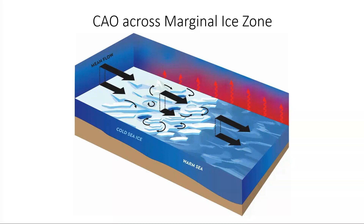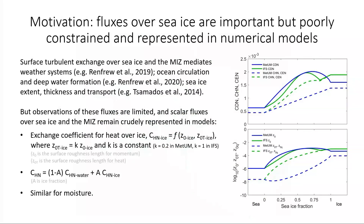During cold air outbreaks — in the northern hemisphere, northerly winds bringing very cold air from high latitudes over the warmer ocean — you get upward heat and moisture fluxes, but their distribution and magnitude depend critically on the surface roughness over the sea ice and the Marginal Ice Zone. These turbulent fluxes of momentum and scalar constituents are known to be important, influencing weather systems, ocean circulation and deep water formation, and sea ice melting and transport. But observations are difficult to come by and quite limited, and partly as a consequence, their representation in numerical models has been quite crude. In recent years there have been considerable improvements in momentum exchange representation over the MIZ, but scalar exchange representation has lagged behind.